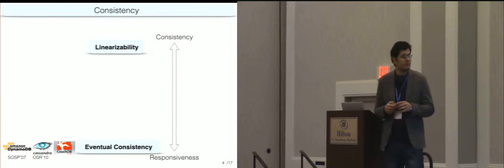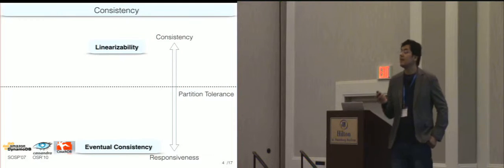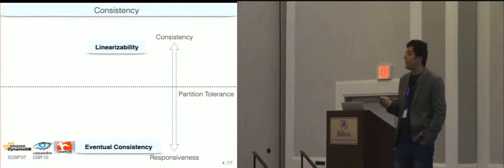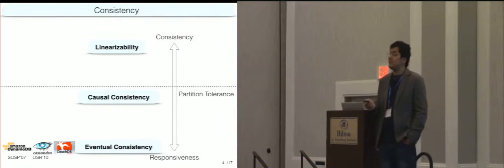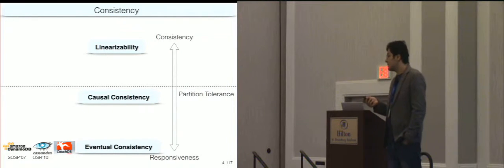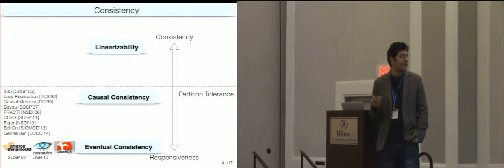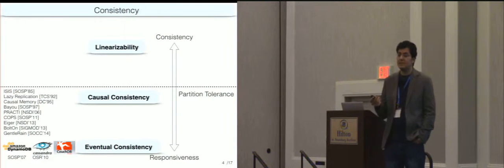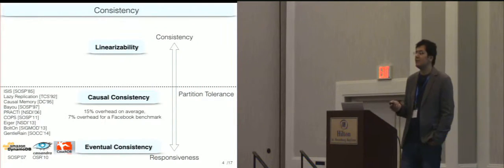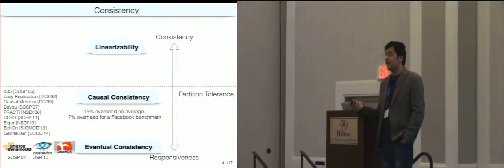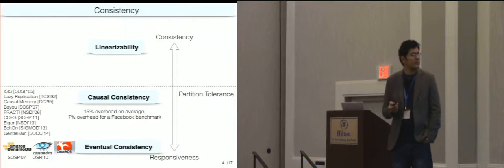Examples of eventually consistent systems are Amazon Dynamo, Facebook Cassandra, and CouchDB. The high-level guarantee that these systems give you is that when all the messages in the system are processed, eventually all the replicas are going to have the same state. Linearizable systems are more consistent, and eventually consistent systems are more responsive. The CAP theorem says there is an important line in between — only the systems below this line are partition tolerant. Theoretical results suggest that causal consistency is one of the strongest notions of consistency we can provide if a partition happens. Recent systems like Cops, Eiger, Gentle Rain, and Bolton provide causal consistency. Eiger reports only 15% overhead compared to eventually consistent Cassandra on average, and on a realistic Facebook benchmark, the overhead is only 7%.